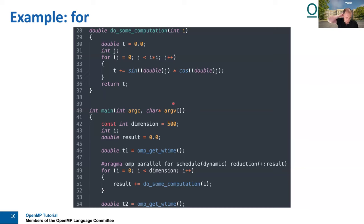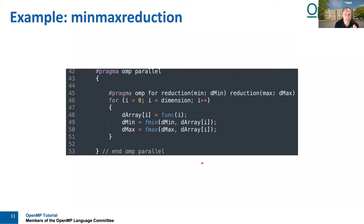If we do a static schedule, the loop iteration space is distributed evenly, which is not ideal given the load imbalance. A good solution is to use a dynamic schedule, where the loop iterations are distributed one by one to threads whenever they finish their previous assignment. With dynamic scheduling, we can achieve linear scalability on this particular code because the OpenMP runtime distributes the work in a much better way. The reduction on the result is necessary, and finally we also have a min-max reduction.